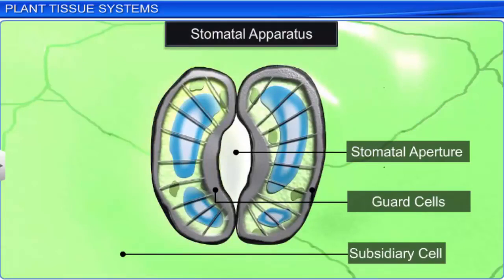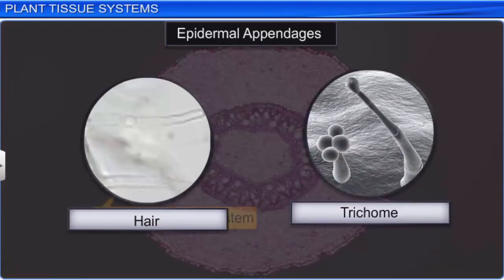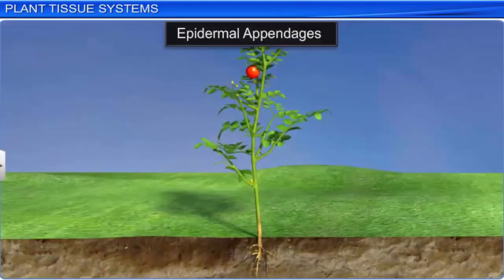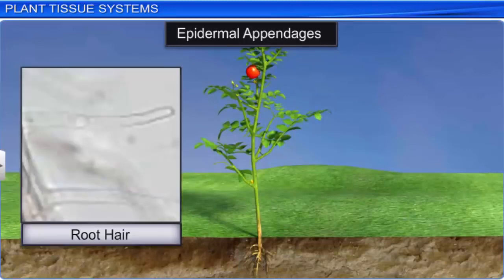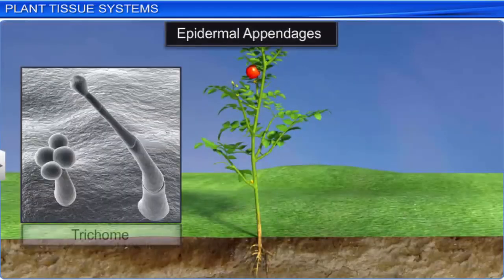The epidermal tissue has epidermal appendages such as hair and trichomes. The root hairs are unicellular elongations of the epidermal cells and they help absorb water and minerals from the soil. The epidermal hairs on the stem are known as trichomes. They may be branched, unbranched, soft, or stiff, and may also be secretory in function. Besides this, trichomes prevent loss of water due to transpiration.